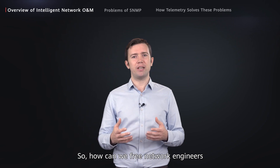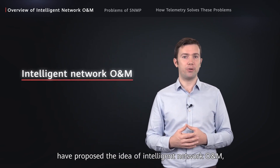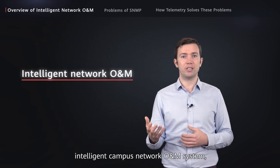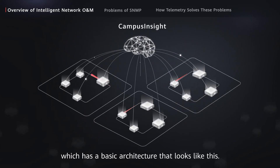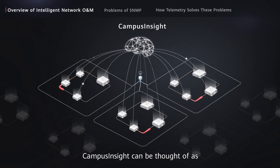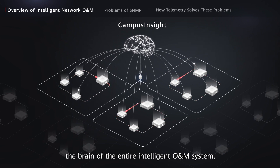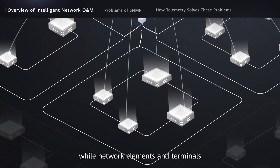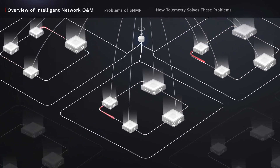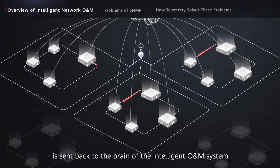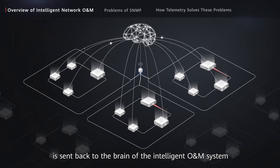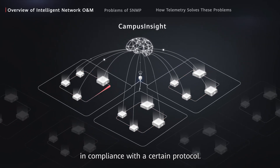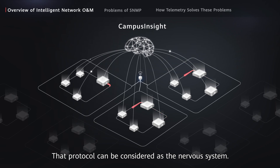This makes Network O&M more difficult than ever and puts much pressure on network engineers. So, how can we free network engineers from heavy workload? Many industry-leading vendors have proposed the idea of Intelligent Network O&M, such as Huawei's Intelligent Campus Network O&M System. Campus Insight can be thought of as the brain of the entire Intelligent O&M System, while network elements and terminals are like the torso and limbs. The collective network service data is sent back to the brain in compliance with a certain protocol — that protocol can be considered as the nervous system.